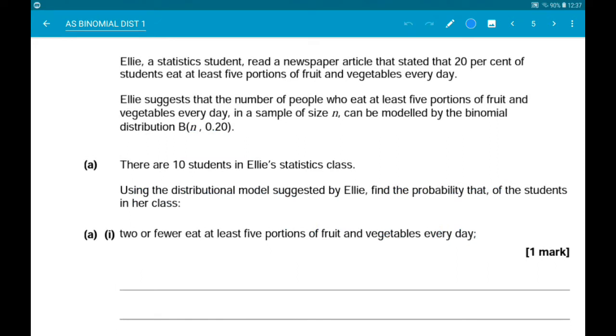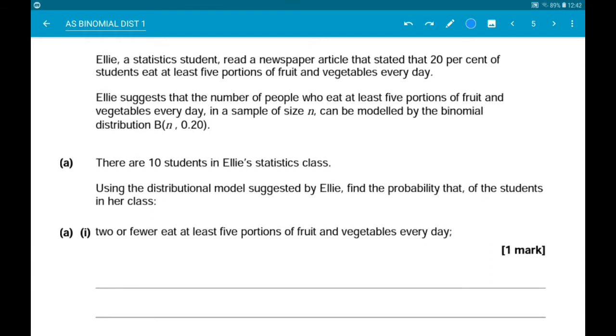Number 2. Ellie read in a newspaper article that 20% of students eat five portions of fruit and veg every day. She suggests that the number of people eating at least five portions in a sample of size n can be modeled by the binomial distribution n, 0.2. There are 10 people in Ellie's class. Using the distribution model suggested by Ellie, find the probability that of the students in her class, first up, two or fewer eat at least five portions every day.